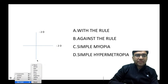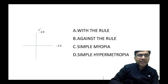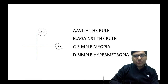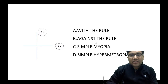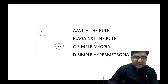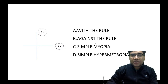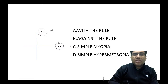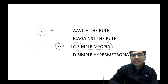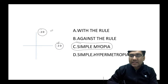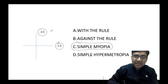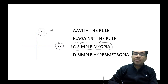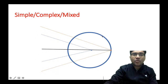When you have the same refractive error in both meridians, this is not astigmatism — it is simply low myopia. Astigmatism is defined as having different power in different meridians.